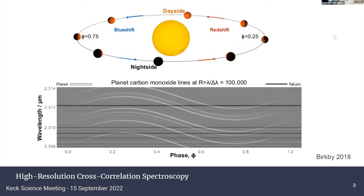Over a couple of hours, tellurics and stellar features don't change that much, so those are flat. If you take a long sequence, you can divide out effectively the star and the Earth's atmosphere and then look for features that show this variation. The signal-to-noise on these features isn't great, but we can combine them with a cross-correlation function and then make a good detection.